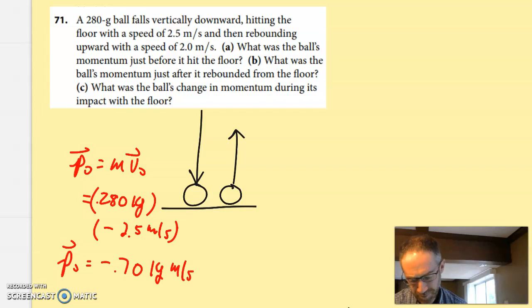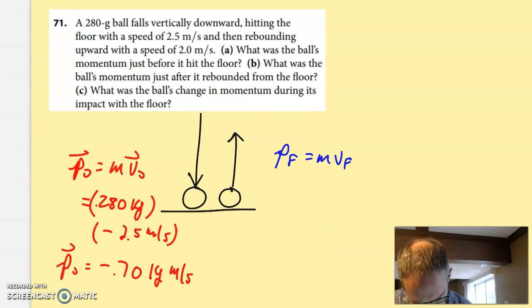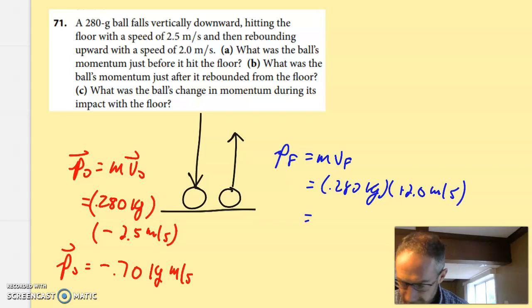I'm going to do the same thing for the momentum after. It says afterwards it bounces up with a speed of 2 meters per second, so same deal. Final momentum is the mass times the final velocity, 0.280, again converting to kilograms, times the positive 2. This time it's going up, and so that's going to be 0.56, and this time that's a positive amount of momentum, kilogram meter per second.